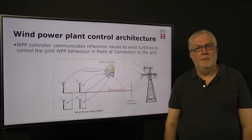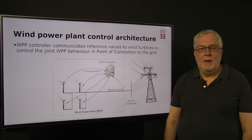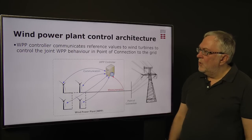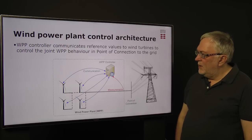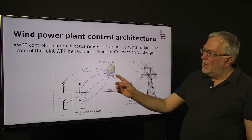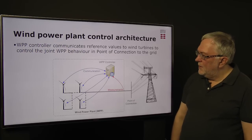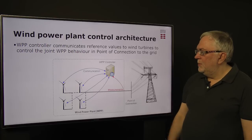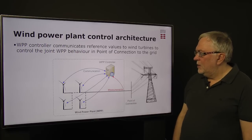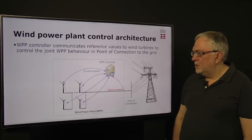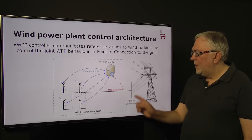Now to the architecture of the wind power plant. What we have here is that we have a central controller in the wind power plant which is communicating reference values and receiving back status from the wind turbines, and also taking measurements from the point of connection to see that we are supplying what we are supposed to supply to the grid here in the point of connection.